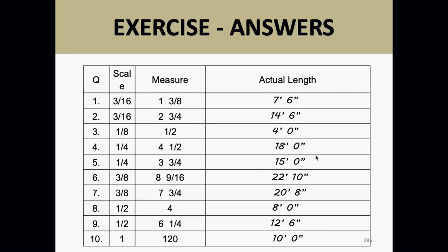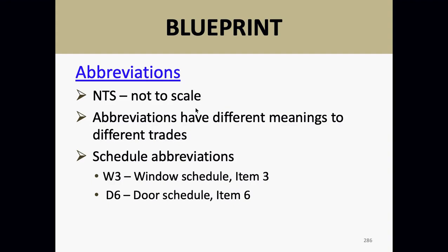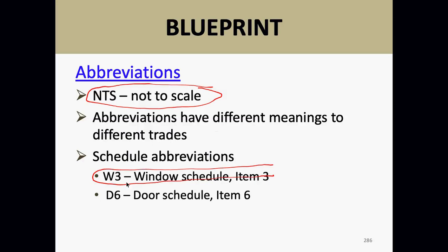You'll see some abbreviations on blueprints. NTS — Not To Scale — is the most common; it means there should be a key elsewhere with the measurements. On a window schedule, a notation like W3 means look at window item number three. Door schedule notation D6 means look at door item six.